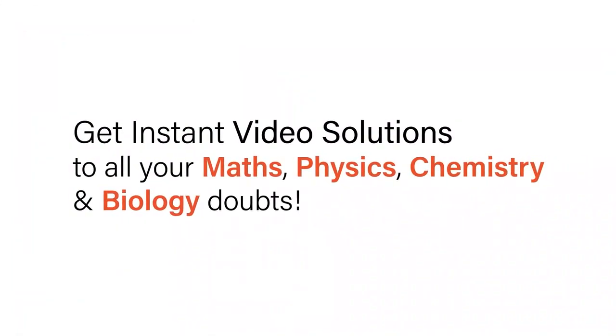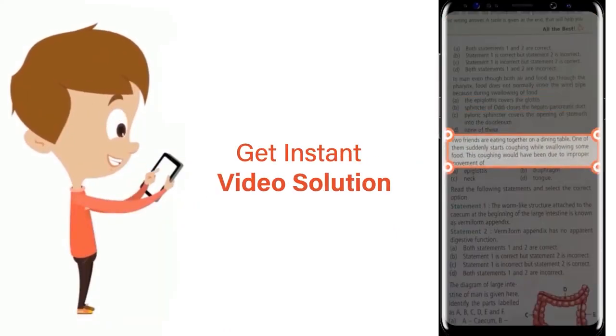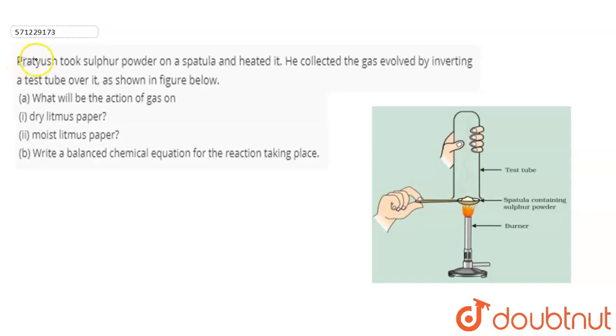With Doubtnet, get instant video solutions to all your maths, physics, chemistry and biology doubts. Just click the image of the question, crop the question and get instant video solution. Download Doubtnet app today. Hello everyone, the question is Pratyush took sulfur powder on a spatula and heated it.